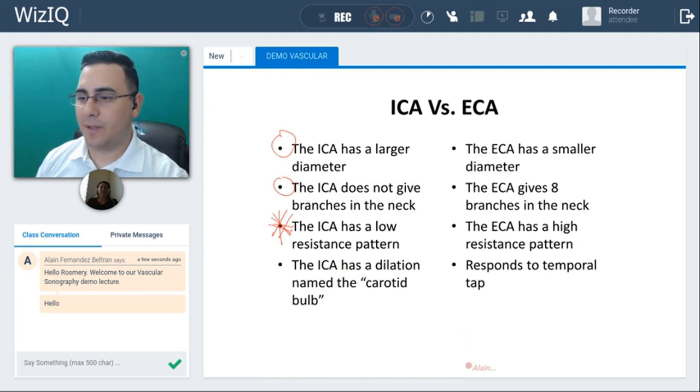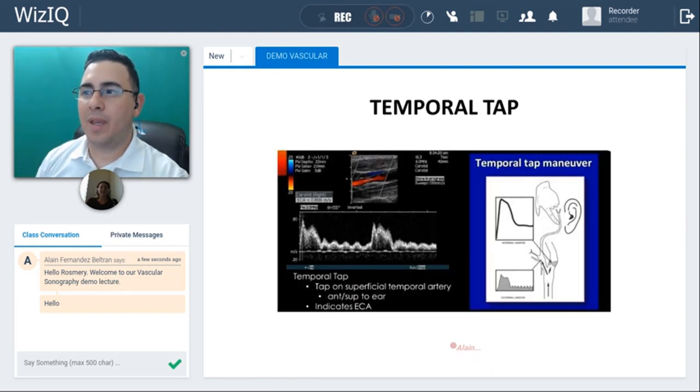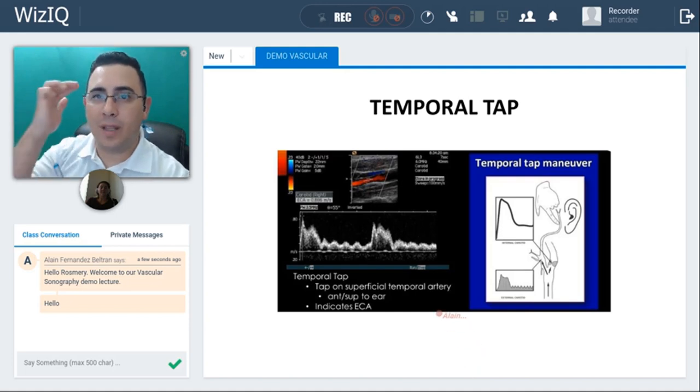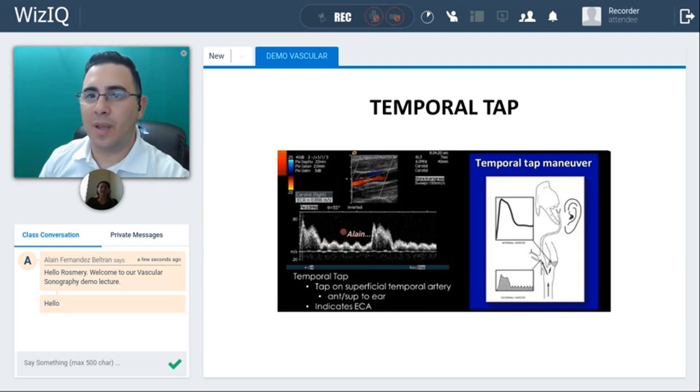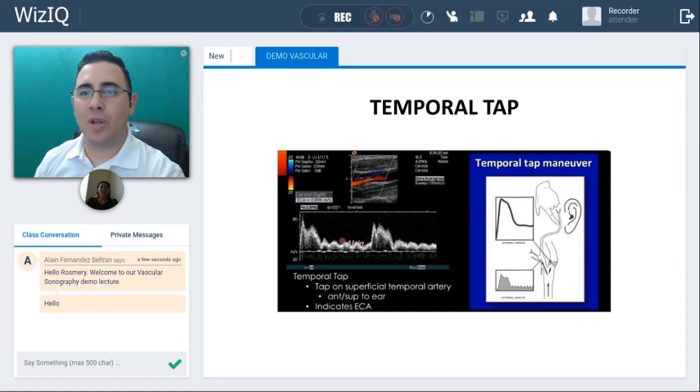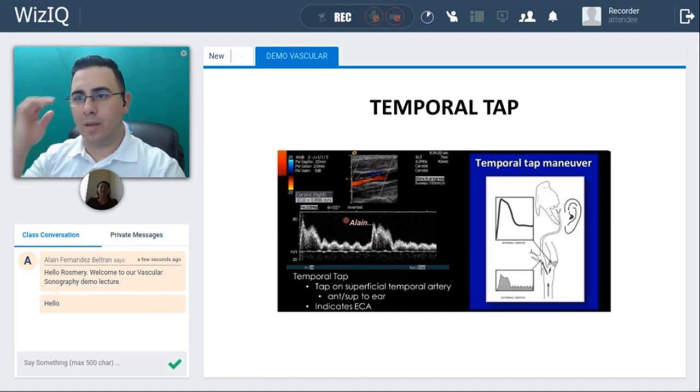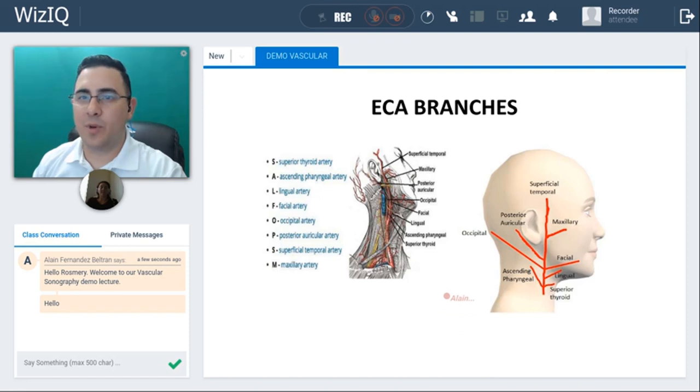Now let me explain what this is. Temporal tap is when you tap right in here. There's one branch that we call a superficial temporal artery which is a branch from the external and when you hit in here boom boom boom this is going to happen in the waveform of the external carotid artery. Of course you're going to be taking the external, taking a Doppler waveform from the external and then you just tap in here, boom boom boom, it's the temporal tapping.